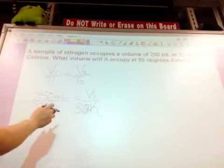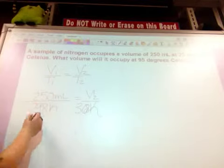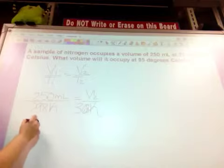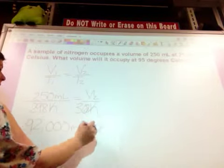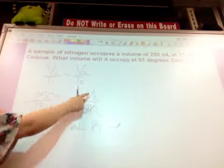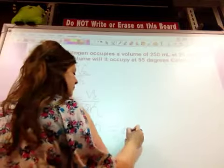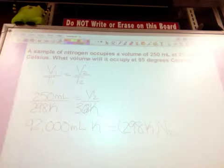So to do that, we're just going to cross multiply and then divide. So if I did 250 milliliters times 368, that would give me, and then that would also be left over V2 times 298. So to get V2 by itself, I would just divide both sides by 298 Kelvin.